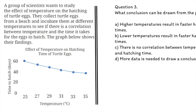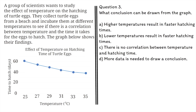Question 3: What conclusion can be drawn from the graph? A. Higher temperatures result in faster hatching times. B. Lower temperatures result in faster hatching times. C. There is no correlation between temperature and hatching time. D. More data is needed to draw a conclusion.